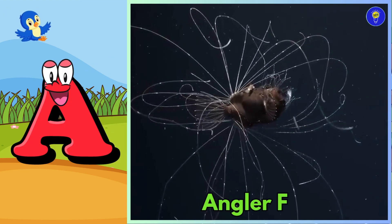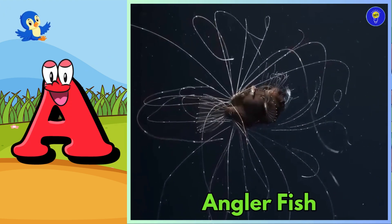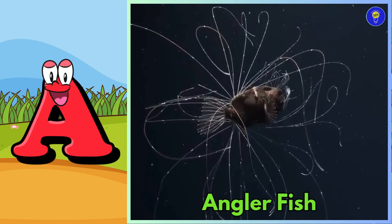A is for anglerfish, ah, anglerfish. B is for barracuda, buh, barracuda.